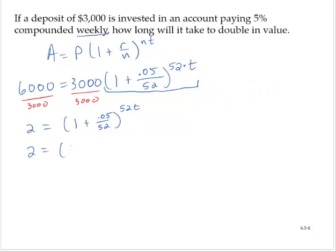So 2 equals 1.000961538 raised to the 52t. Notice that I can easily convert this to a logarithmic form. Log base 1.000961538 of 2 is equal to 52t.